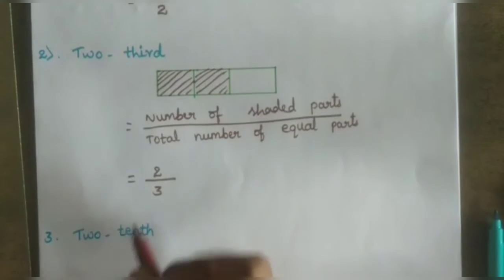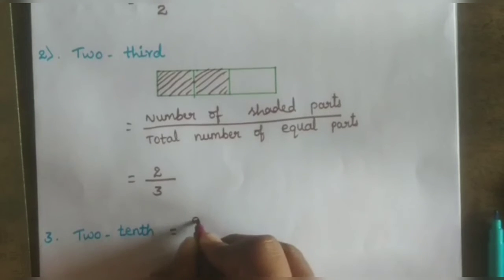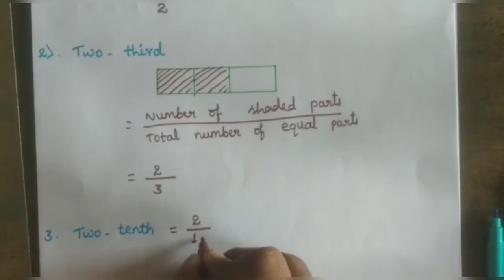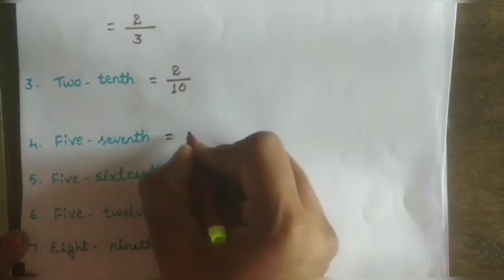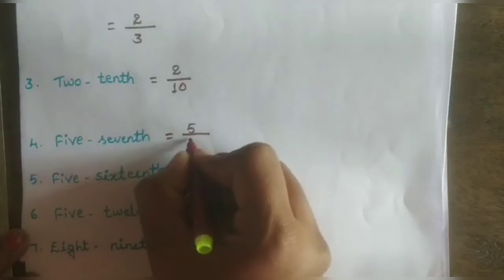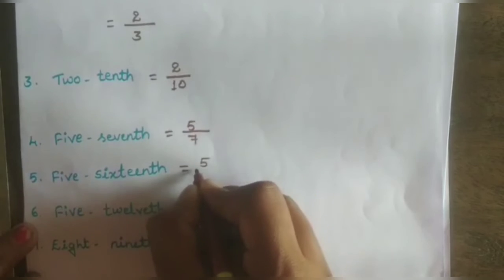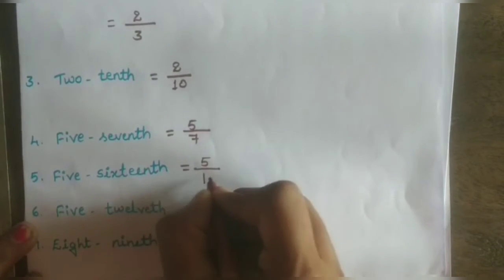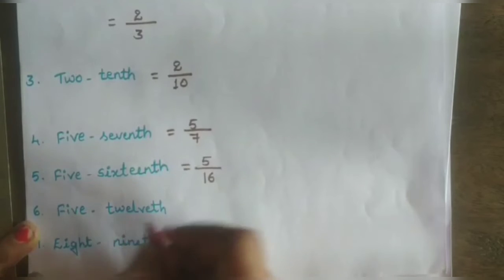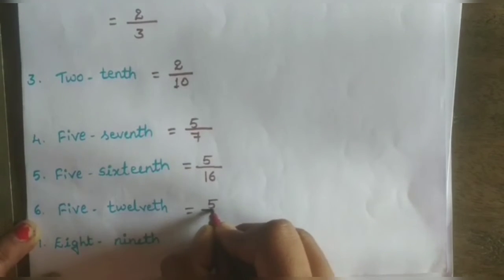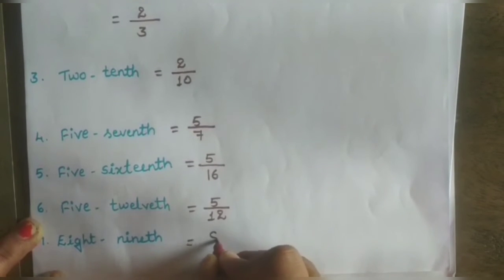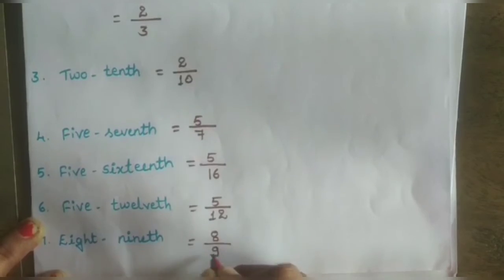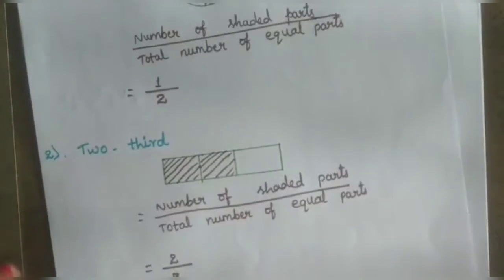Similarly: two tenths — two in the numerator and tenth in the denominator, that is two tenths. Five sevenths — five in numerator, seven in denominator. Five sixteenths — five in numerator, sixteen in denominator. Five twelfths — five in numerator, twelve in denominator. Eight ninths — eight in numerator, nine in denominator.